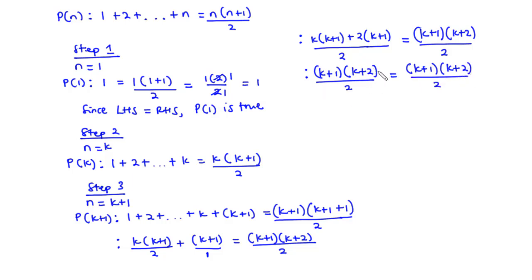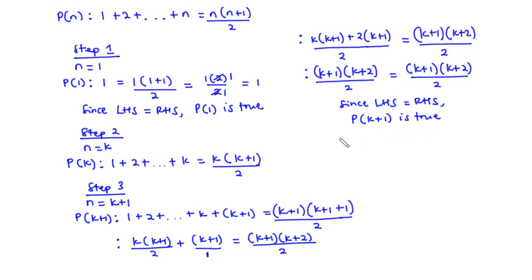Since the left-hand side is equal to the right-hand side, it follows that the statement is true for n equals k + 1. Hence, the original statement p(n) is true for all natural numbers. That's it for today's video — thank you for watching and see you in the next video.